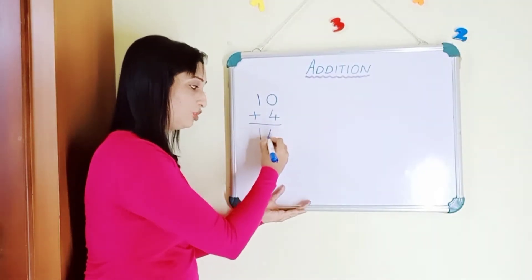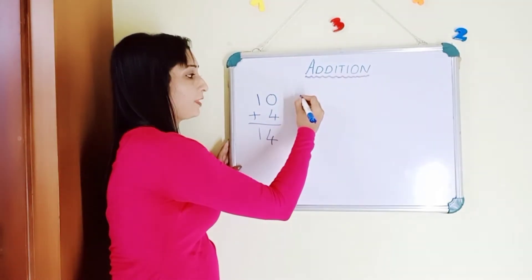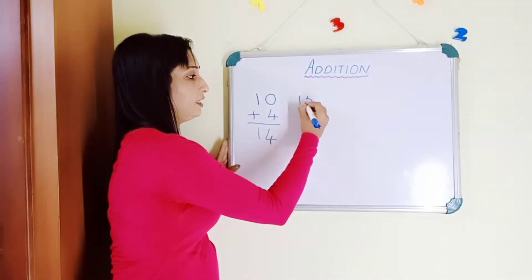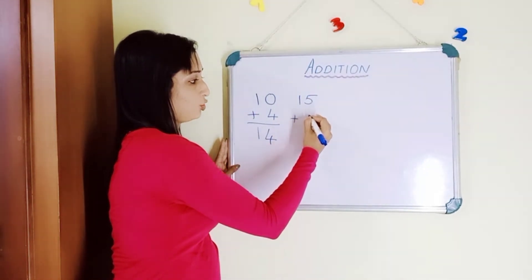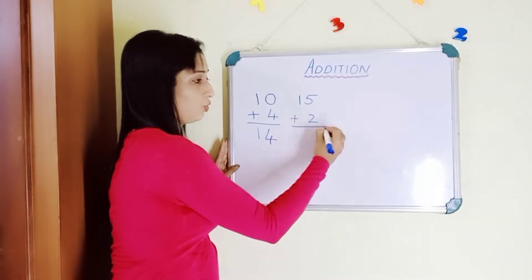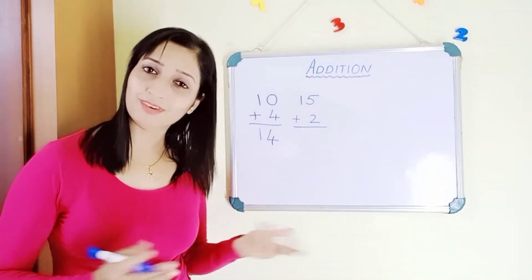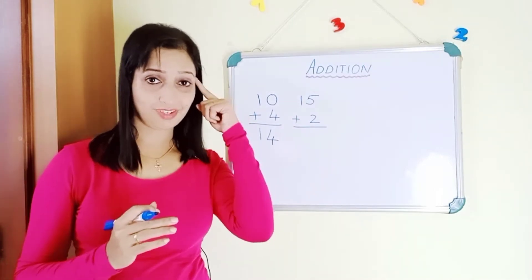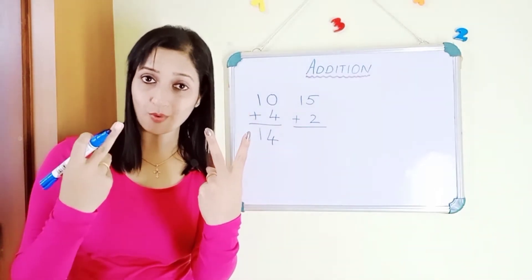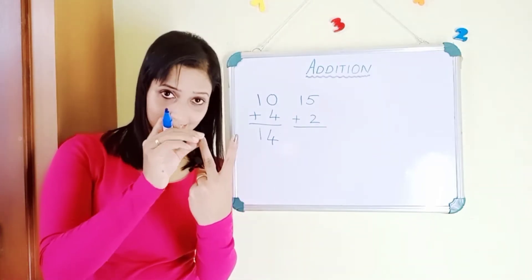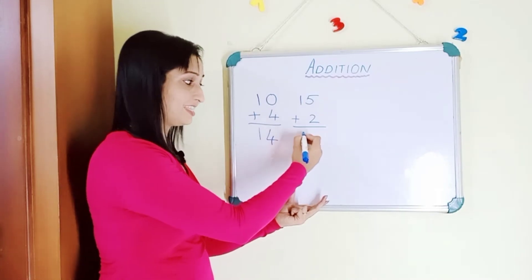Next example: fifteen plus two. Fifteen in your mind and two in your hand. Count forward after fifteen: sixteen, seventeen. The answer is seventeen.